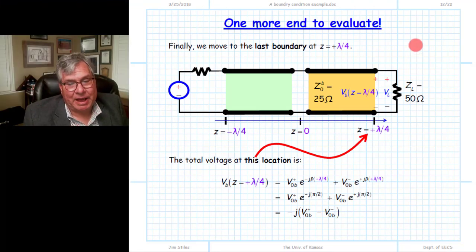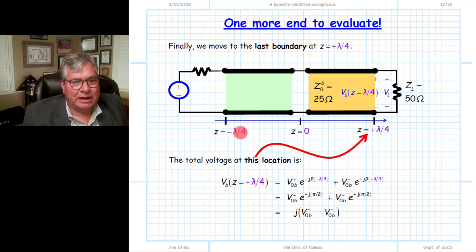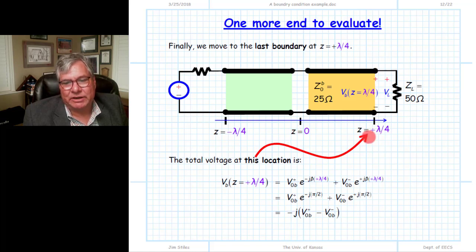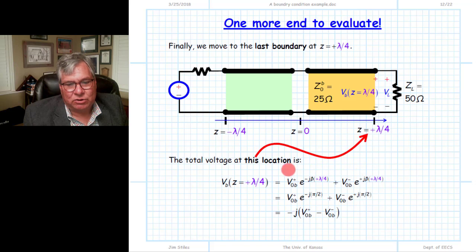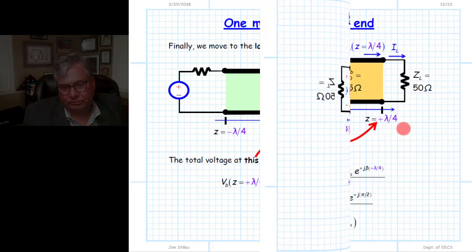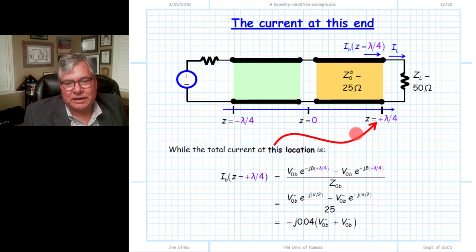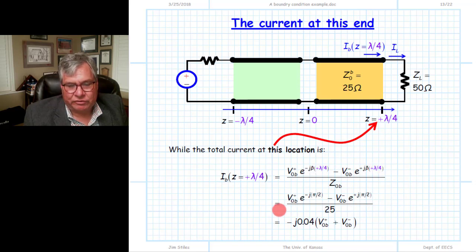Our last boundary condition comes from the end of the second transmission line at z equals plus lambda over 4. We evaluate the total voltage at that location by inserting z equals plus lambda over 4 into the total voltage expression, carefully evaluating the complex exponentials. We similarly determine the total current at the end of this transmission line at z equals lambda over 4, inserting into the total current expression IB.